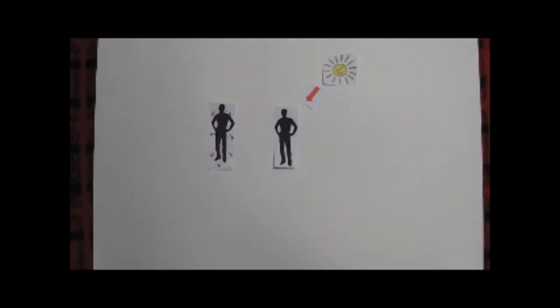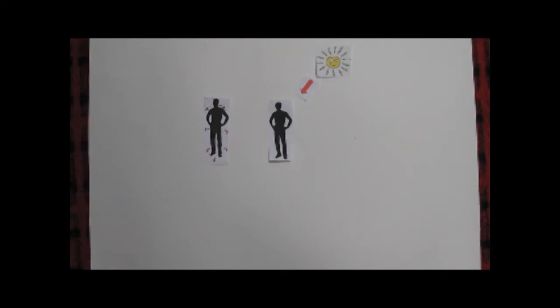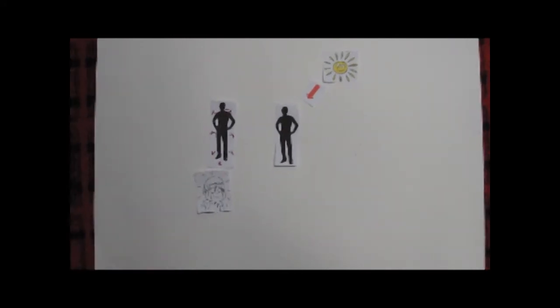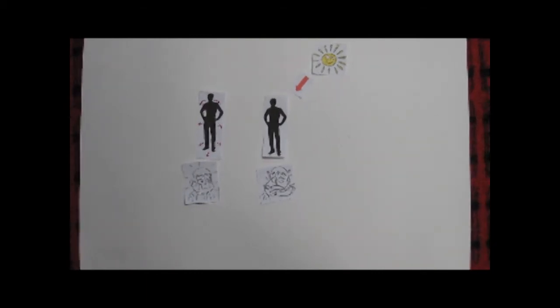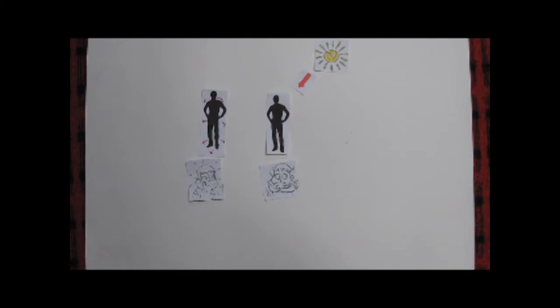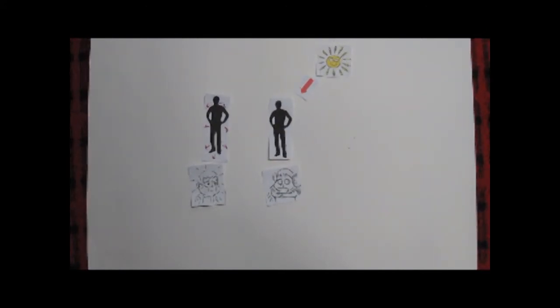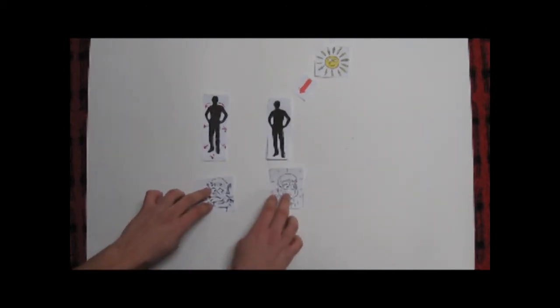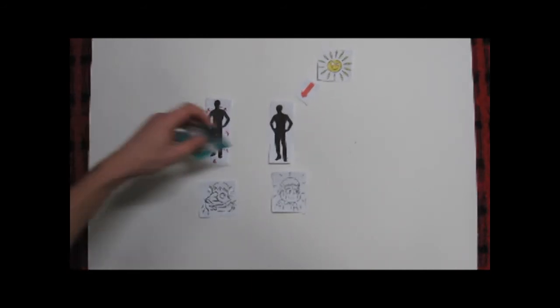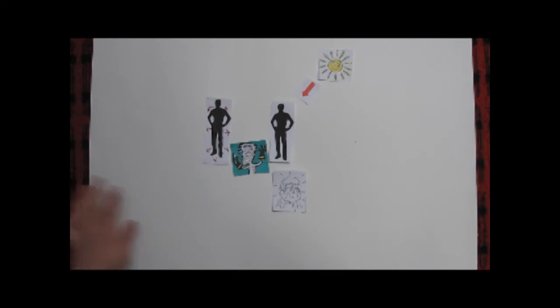It's easy to see why many people consider endotherms warm-blooded and ectotherms cold-blooded. But you now know that ectotherms don't necessarily have lower body temperatures than endotherms. In fact, when sitting in the sun, many ectotherms can have higher body temperatures than most endotherms. This is why scientists have ceased using the terms warm-blooded and cold-blooded.